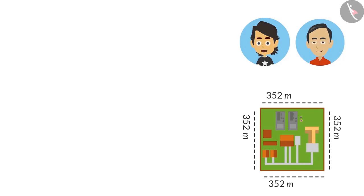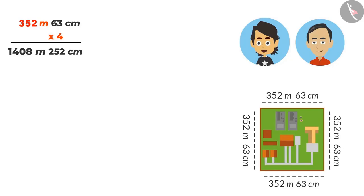So, to get the boundary's length, we will multiply it by 4. Very good. See, what comes after multiplying? 63 multiplied by 4 will give 252 centimetres. Alright. And multiplying 4 into 352 metres will be 1408 metres. This means that the boundary of your office is 1408 metres and 252 centimetres.